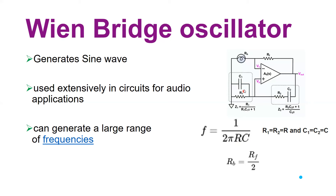The feedback network composed of C2, C1, R1, and R2 is also called an attenuation network. Its attenuation is calculated to be 1/3, so the operational amplifier must provide a gain of 3 so that the loop gain — the product of amplifier gain A multiplied by feedback factor β — is greater than or equal to 1.